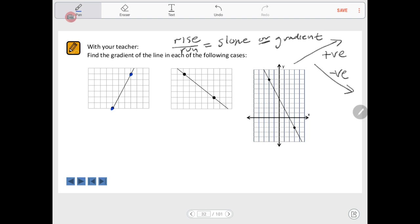but you need to correctly identify the rise and the run. In this case, the rise is one, two, three, four, five, six units upwards. So our rise is six.